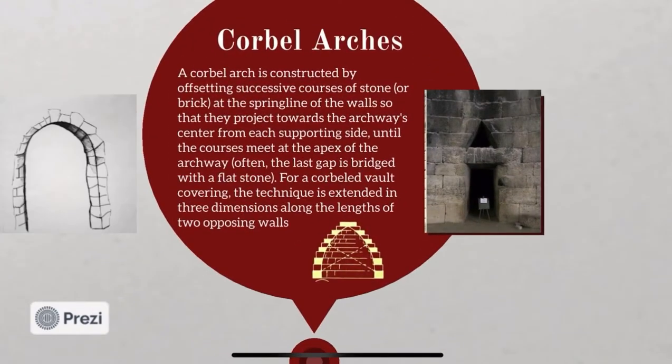Coming into corbel arches — a corbel arch is constructed by offsetting successive courses of stone at the springline of the walls, so that they project towards the archway center from each supporting side until the courses meet at the apex of the archway.